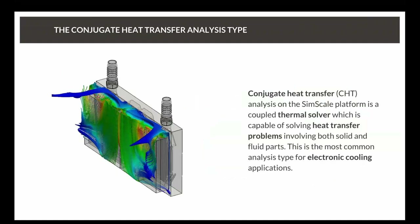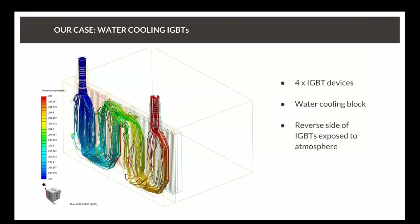The analysis type we're using is conjugate heat transfer, which allows us to examine heat moving through solid components and into both air and water. On the air side we're capturing natural convection, while on the water side we have an inlet and outlet with cold water flowing through to cool the cold plate and draw heat away from the IGBT modules.